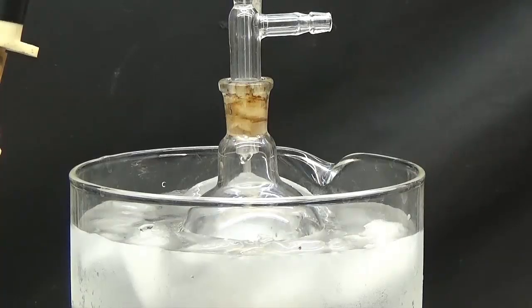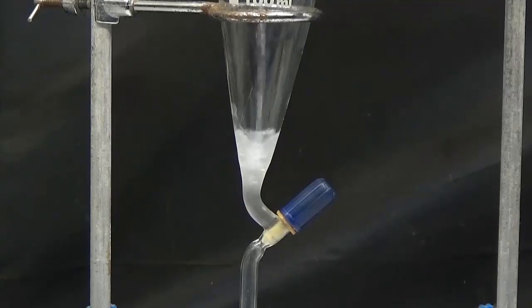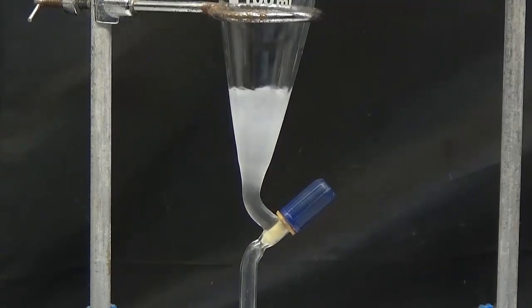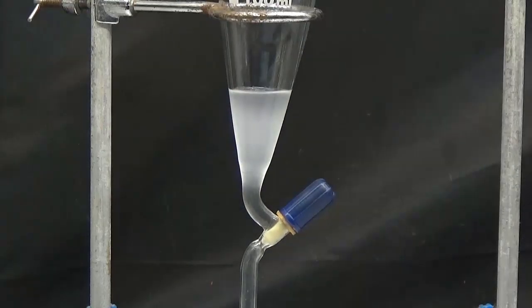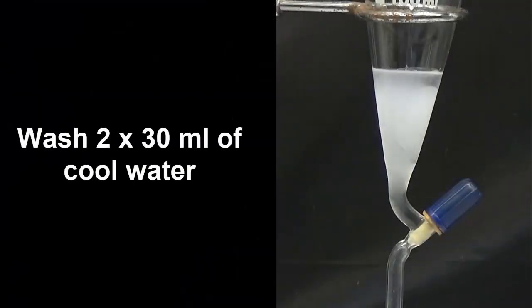The collecting flask was immersed in an ice bath to prevent evaporation of ethyl bromide. When no more ethyl bromide distills, the obtained product is placed in a 100 ml separating funnel. Wash twice using 30 ml of cool water.